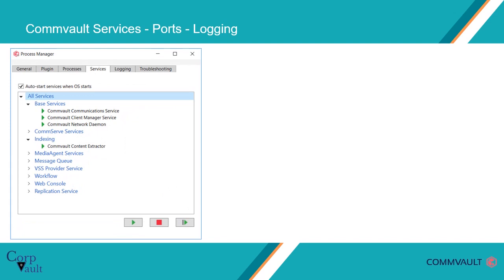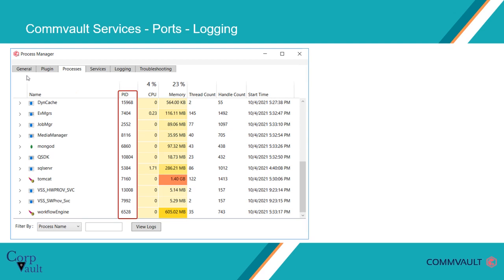Let's discuss how to manage Commvault processes in the Process Manager. From the Process Manager, you can view processes and information about each process, such as CPU usage and memory usage. Click on the Processes tab. From here you can view the process name, the process identifier (PID) number that uniquely identifies a process while it runs, CPU and memory usage, thread count, handle count, and the process start time.